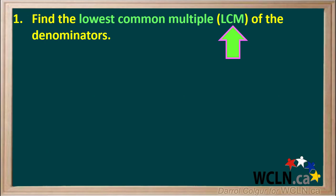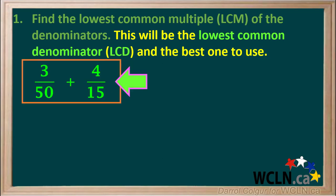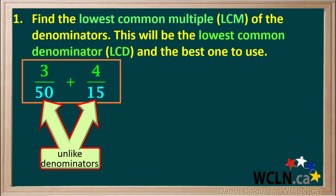The first step is to find the lowest common multiple, or LCM, of the denominators in the fractions we're given. The lowest common multiple of the denominators will be the lowest common denominator, or LCD. And this is the best denominator to use. For example, let's say we're asked to add the fractions 3 fiftieths and 4 fifteenths. We see that the denominators 50 and 15 are not the same, so we need to find the lowest common multiple of 50 and 15.